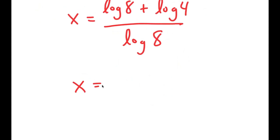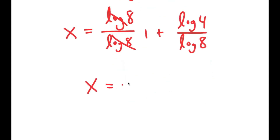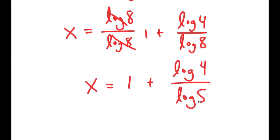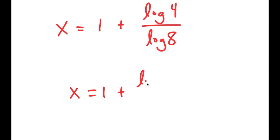This turns into log 8 over log 8 plus log 4 over log 8. These two cancel out to get 1, so I get x is equal to 1 plus log of 4 over log of 8. Now, log of 4 is the same thing as log of 2 squared, and log of 8 is the same thing as log of 2 to the power of 3.